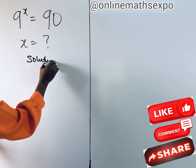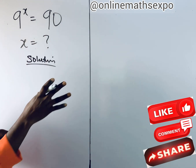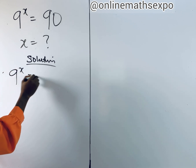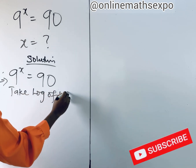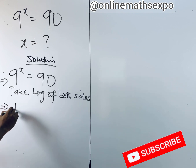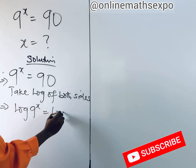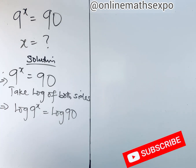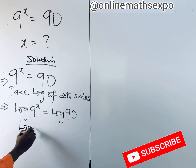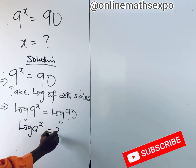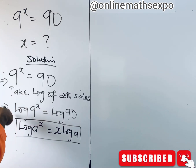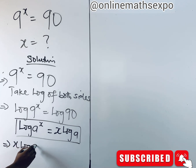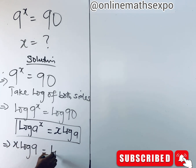Let's begin with the solution. What we do is take the logarithm of both sides. So we take log of both sides, giving us: log of 9 to the power of x is equal to log of 90. Now remember this rule: for every log of a to the power of x, it is equal to x times log a. Using that rule, we get x log 9 is equal to log of 90.